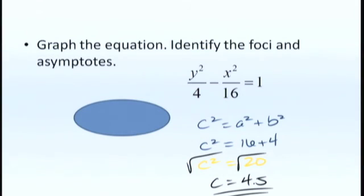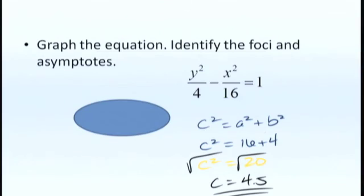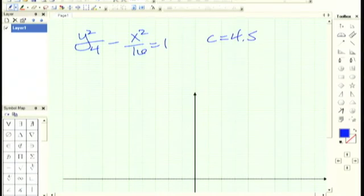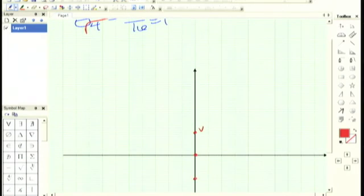Okay, now that I know that c is 4.5, I'll go ahead and graph it. I had y squared over 4 minus x squared over 16 is equal to 1, with my value of c being 4.5. And we'll graph the center, which is at the origin again, because there's no constants in there with x and y. I'll take the square root of 4 is 2, so that's 2 units up and 2 units down in the y direction because that 4 is underneath the y.